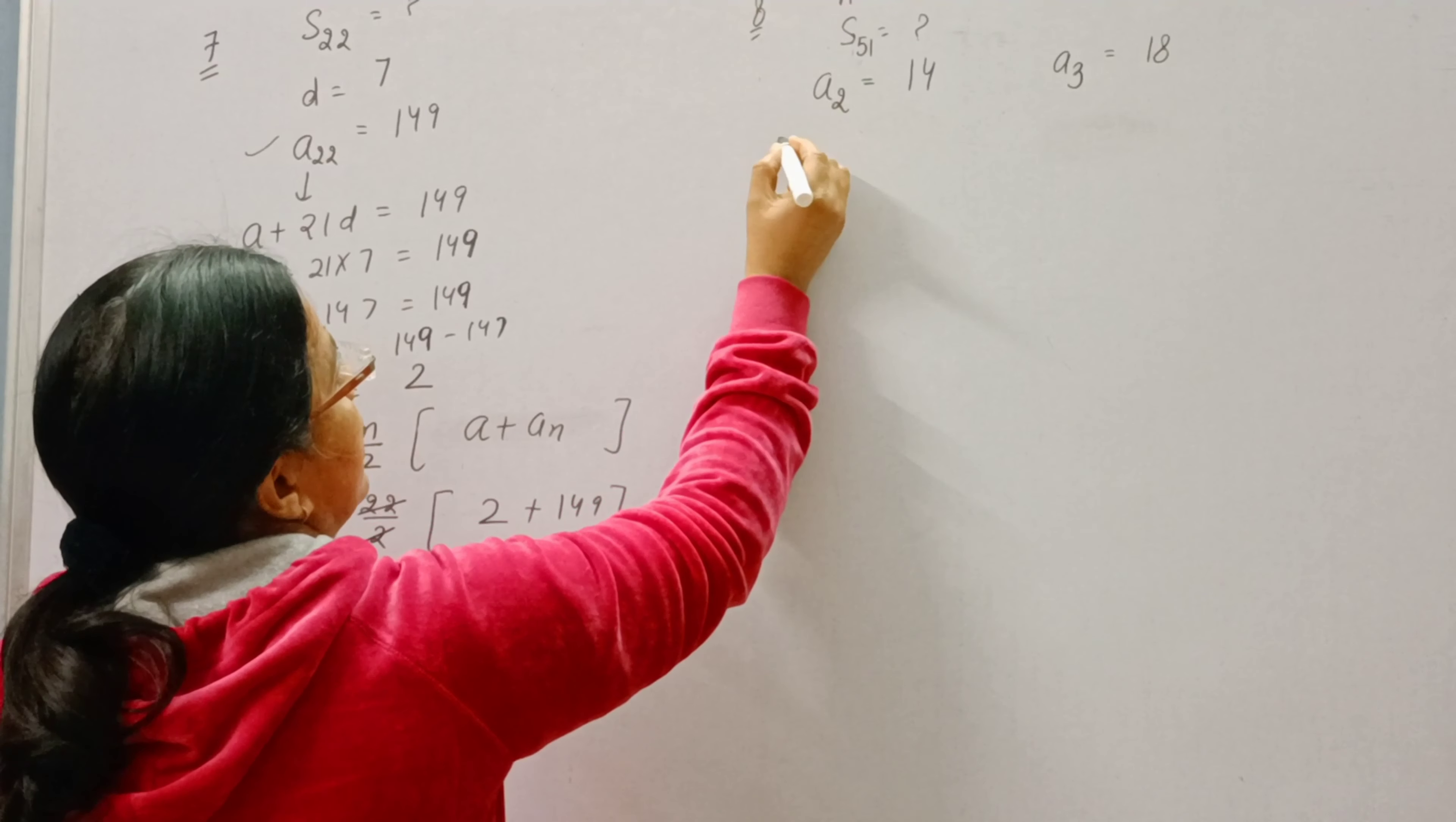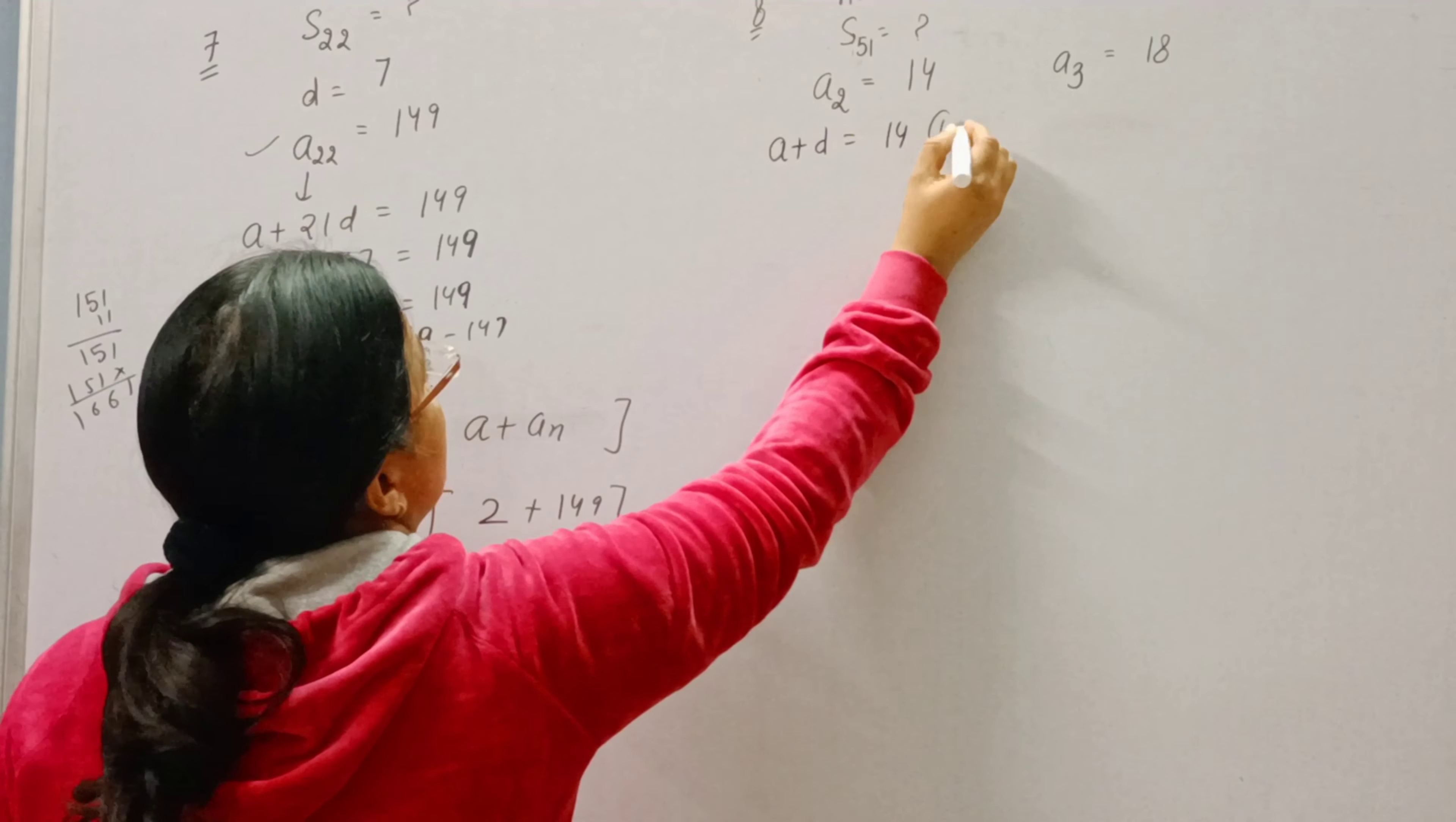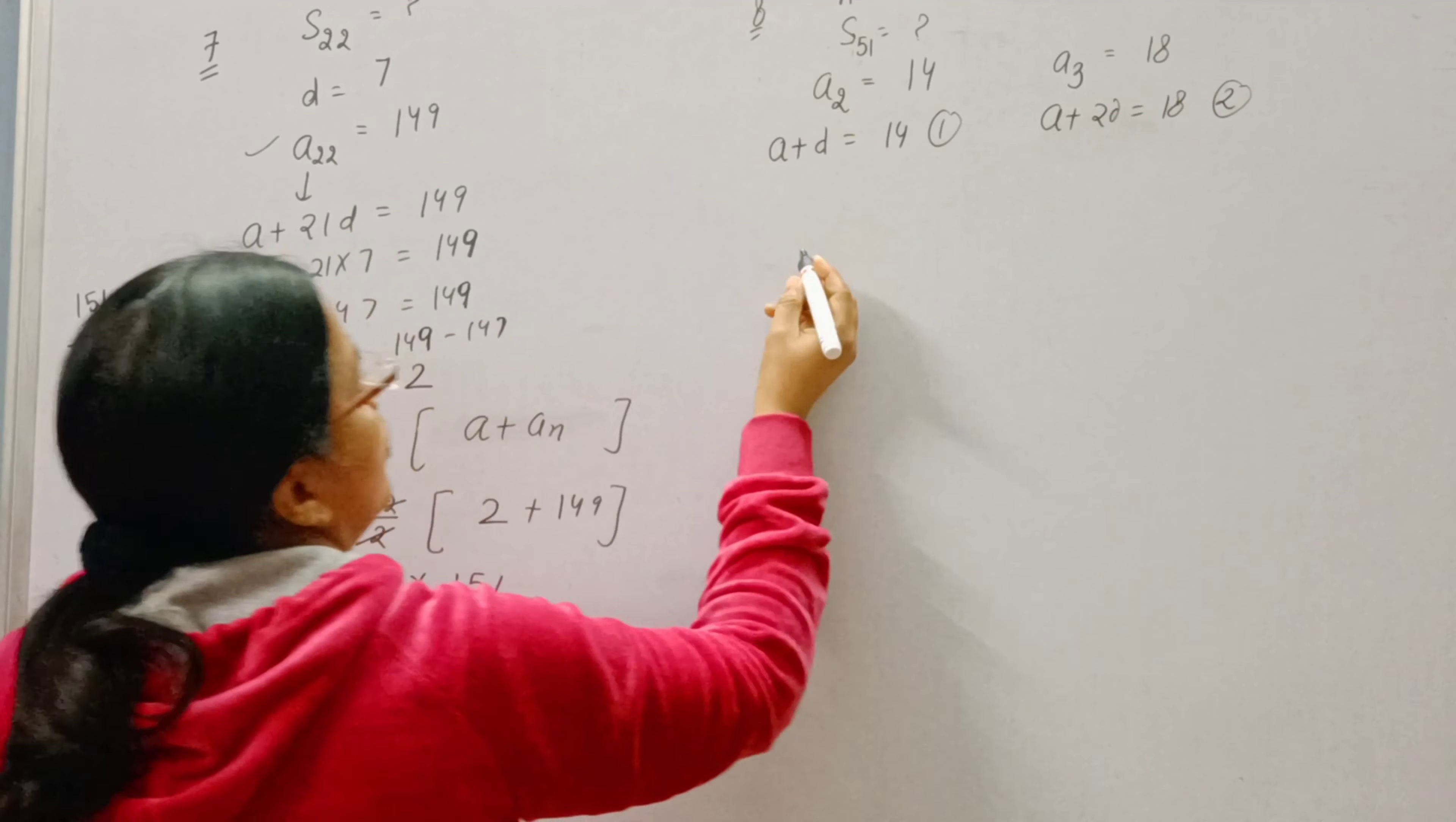Now see, how can you write second term? A plus D. So this is the first equation. And how can you write third term? A plus 2D. This is the second equation.